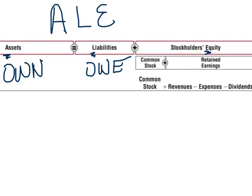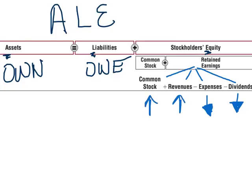Retained earnings gets further broken down into common stock plus revenues. Then retained earnings breaks into common stock plus revenues minus expenses and minus dividends. Expenses decrease our equity, and dividends decrease our equity — in both cases we're paying monies out of the business, which is why equity goes down. Revenues increase our equity, and common stock represents monies that come in from investors.